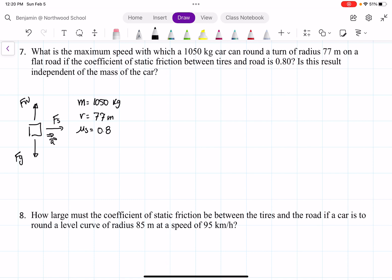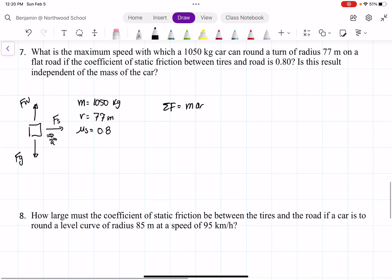So what we're going to start is we're going to look in the x direction, which we have the net force is equal to m a r, where the net force is just going to be the static friction equals to m, and it's going to be v squared over r.